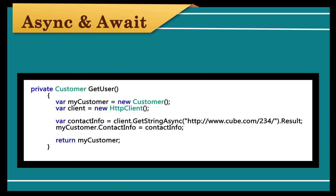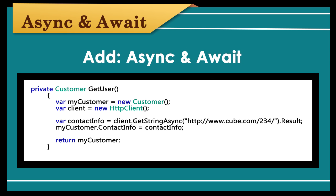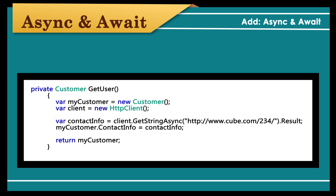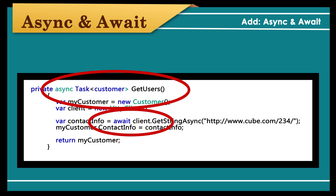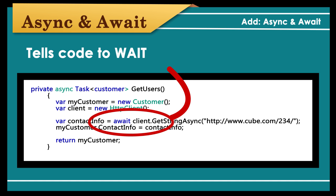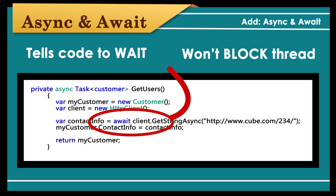So, how do we change this coding to make this an asynchronous process and keep our users happy? We add async and await to our code so this happens simultaneously. We start by modifying the first method signature — our signature is async task of customer. We add async to this line of code, which tells the compiler that there is an await keyword somewhere in the remaining code. Await tells the code to wait until this completes, but it will not block the thread from performing other actions.